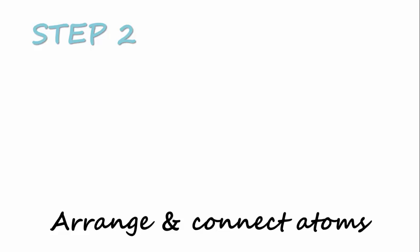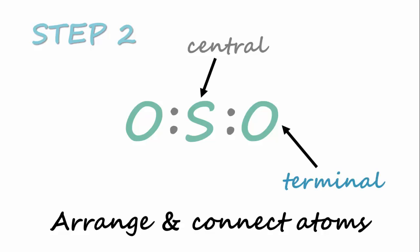Step 2, we're going to write the chemical symbol of the atoms in a molecule and then connect the atoms with two electrons representing a single bond. Note that the atom in the center is called the central atom, while the atoms at the ends are called terminal atoms.